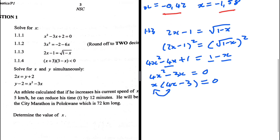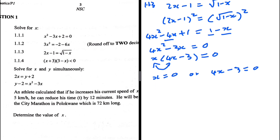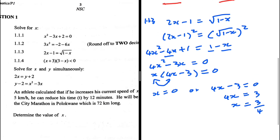We have two numbers multiplying to give 0, so one must be 0. Therefore x equals 0 or 4x minus 3 equals 0, which gives x equals 3/4. So these are our two possible solutions: x equals 0 or x equals 3/4. But we obtained these after squaring both sides, so it is very possible that one of them is not actually a solution to the original equation. Let's find out which one.